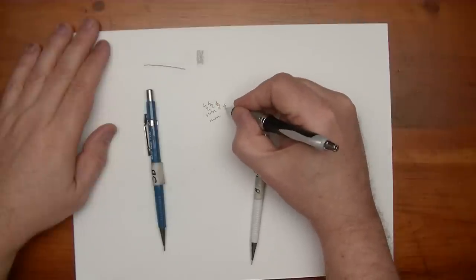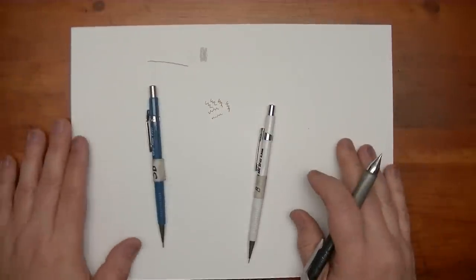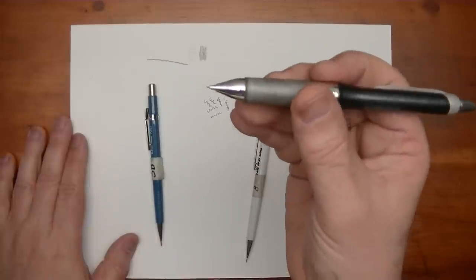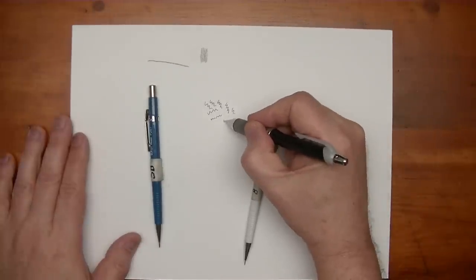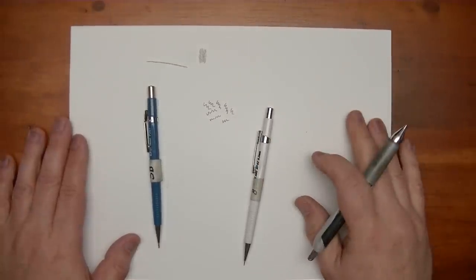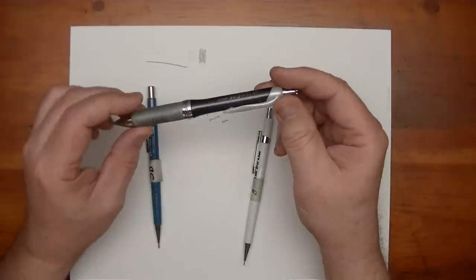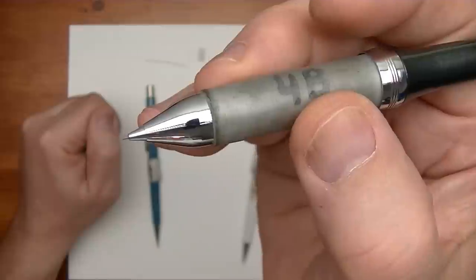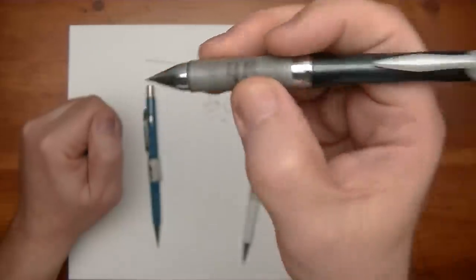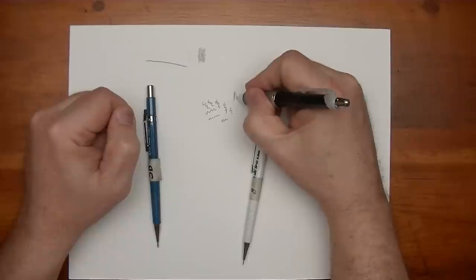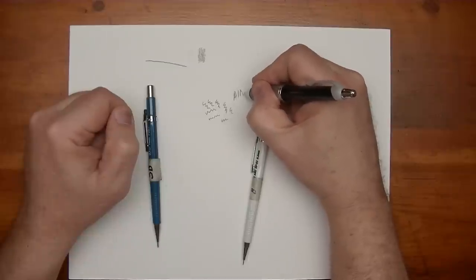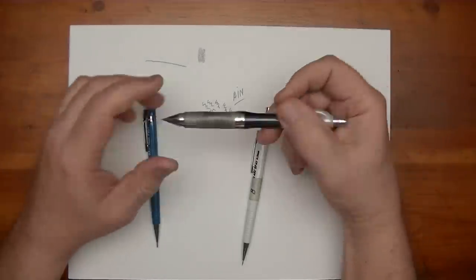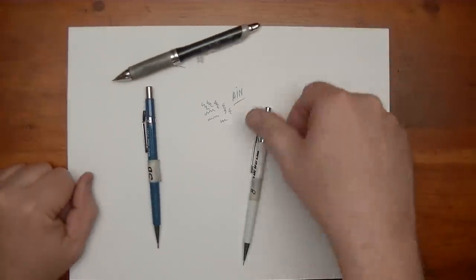The thing about mechanical pencils is they take these very thin lead. We call them lead, but it's really graphite. And you never have to sharpen them. And they always give you a fine line. They're excellent for details. Mechanical pencils never require sharpening. You never sharpen these. You just inject more of the graphite lead out when you need it.